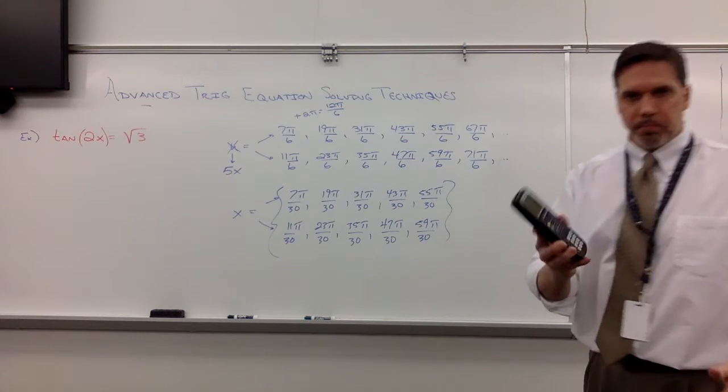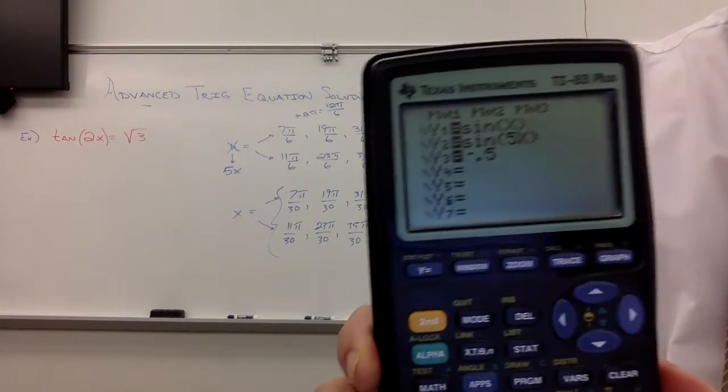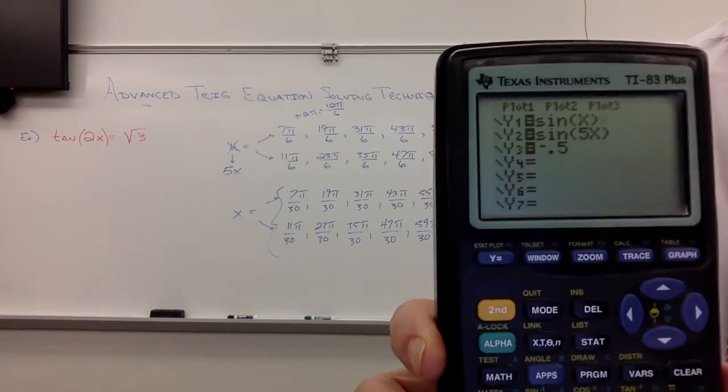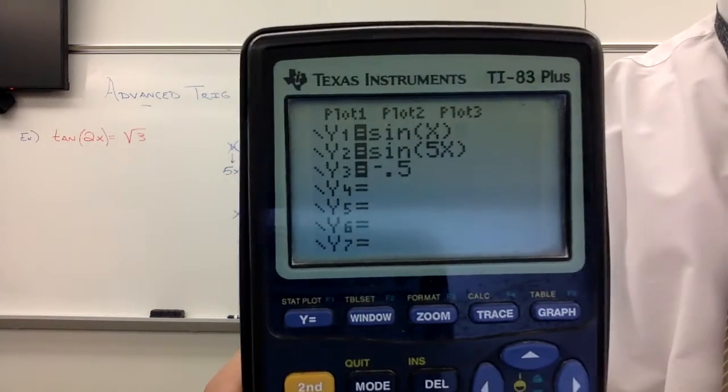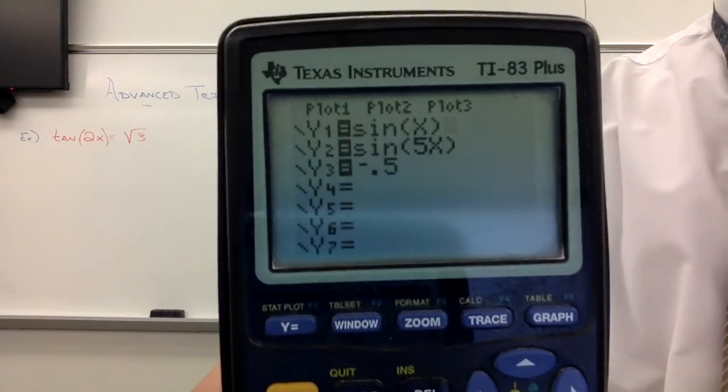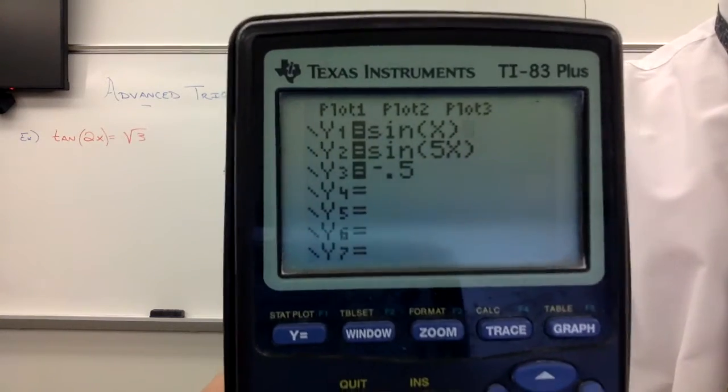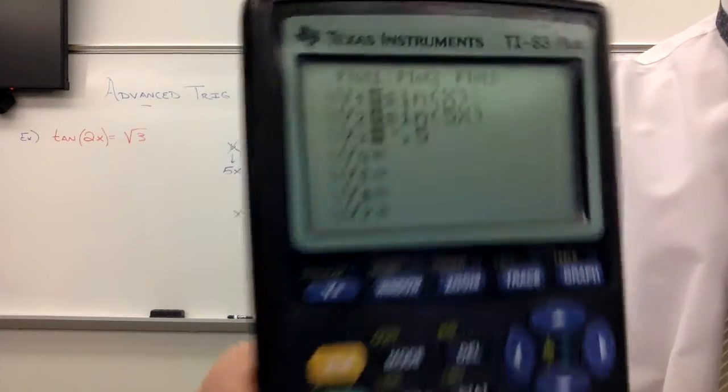But I want to show you on a calculator. Here's what I have. The original function was sine of 5x, and that was supposed to equal negative 1 half. So you can see I have, I can't think in the mirror. Alright, the first function I have is just the normal sine graph. Second function, the sine of 5x, and the third function, y equals negative 0.5, just to show you here.